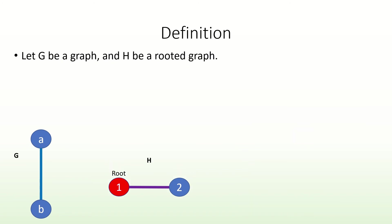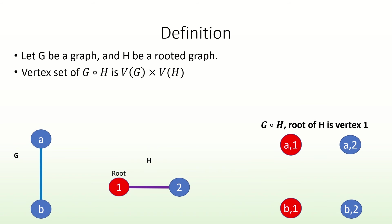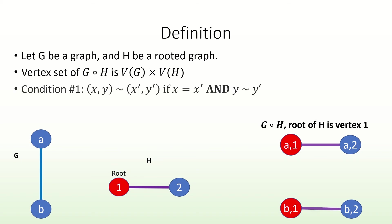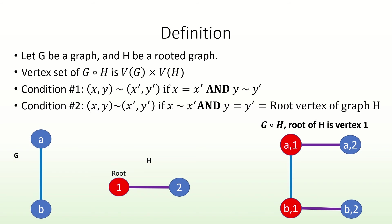More formally, the vertex set of the rooted product of g with h is the Cartesian product of the vertex sets of g and h. The adjacency conditions for the rooted product are defined as follows. First, two vertices are adjacent in the rooted product if their left entries are the same vertex and their right entries are adjacent vertices. Second, two vertices are adjacent in the rooted product if their left entries are adjacent vertices and their right entries are the same vertex and equal to the root vertex in the second input graph.